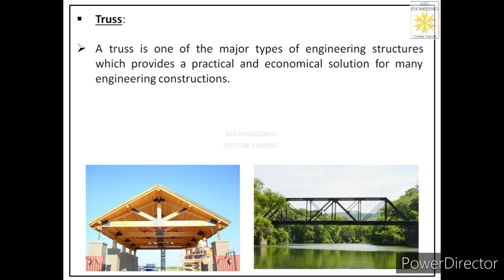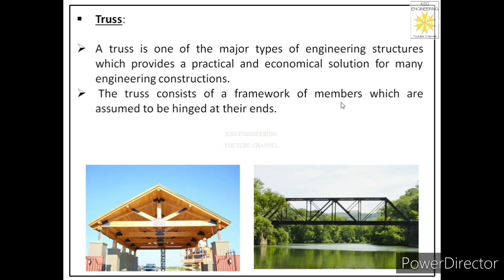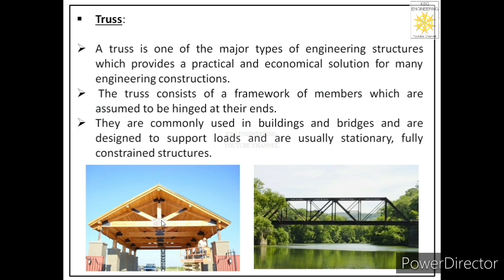We have seen steel bridges and structures used to take the loads off the roofs. So the basic purpose of a truss is that it is used to bear loads. The truss consists of a framework of members which are assumed to be hinged at their ends. This structure is made up of elements, or we call those elements as members. They are commonly used in buildings and bridges, designed to support loads, and are usually stationary, fully constrained structures.